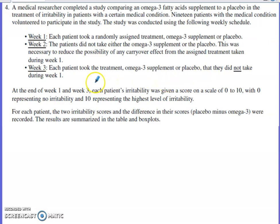Week three, they're going to take the opposite treatment that they had during week one. At the end of week one and week three, the patient's irritability is going to be scored on a scale of 1 to 10, zero representing no irritability, ten representing the highest level of irritability.